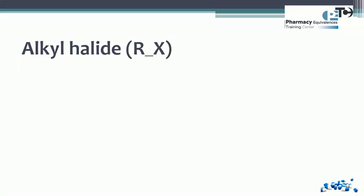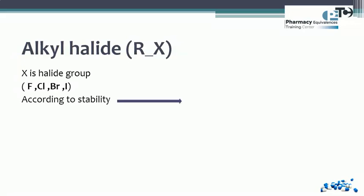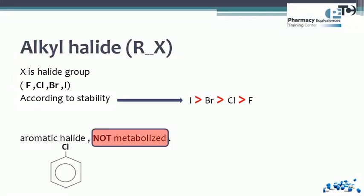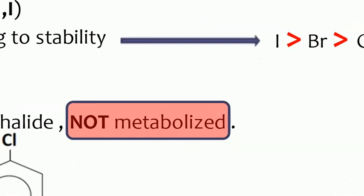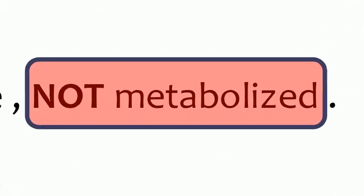Finally, alkyl halides: the halide group X may be fluoride, chloride, bromide, or iodide. According to stability, iodide is more stable than bromide, which is more stable than chloride, which is more stable than fluoride. Also, aromatic halides are not metabolized.